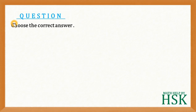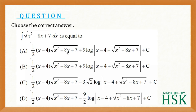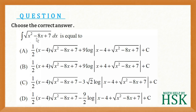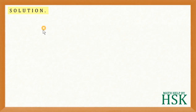In this question we have been given a choose-the-correct-answer objective type question. We have to find which option equals the integration of the square root of x² − 8x + 7 dx. To identify the correct option, we are going to solve this integral.